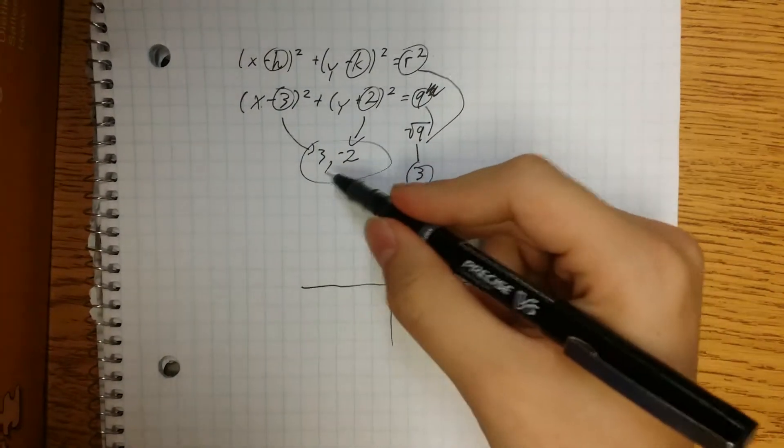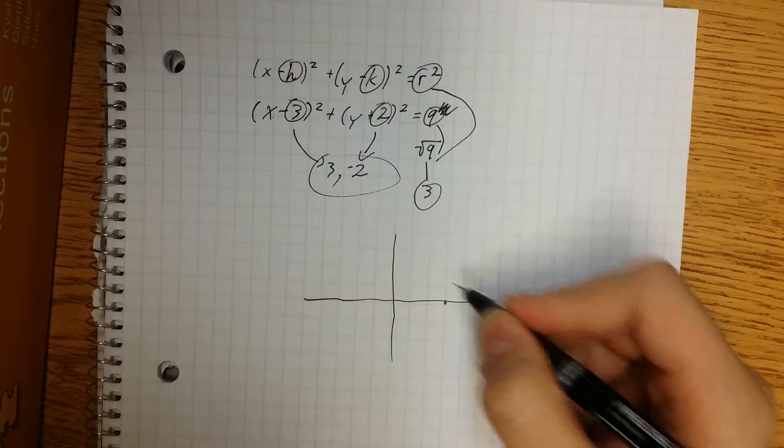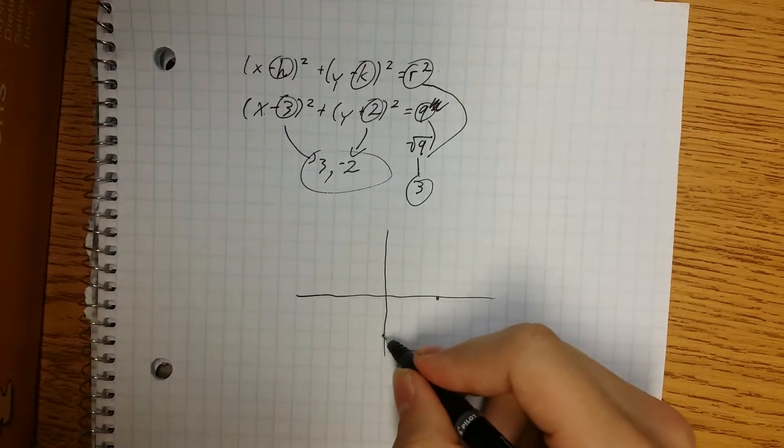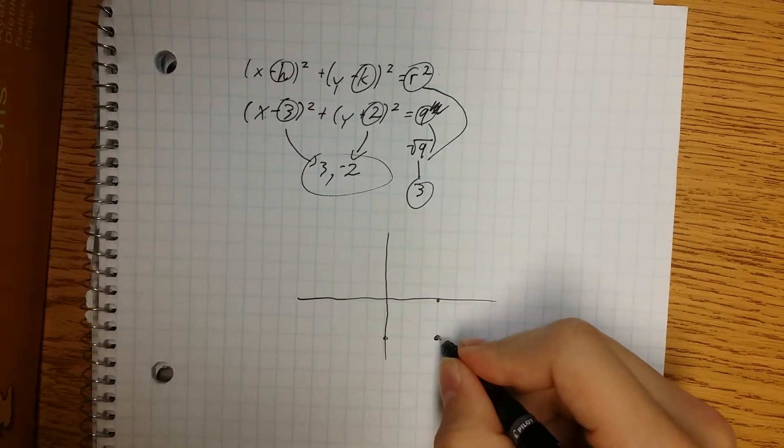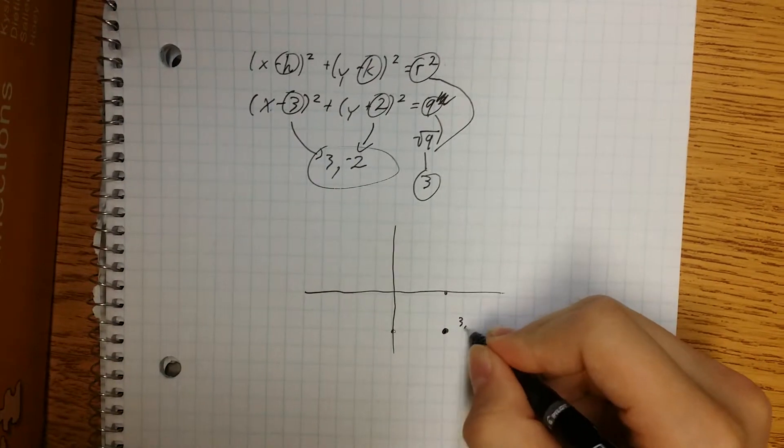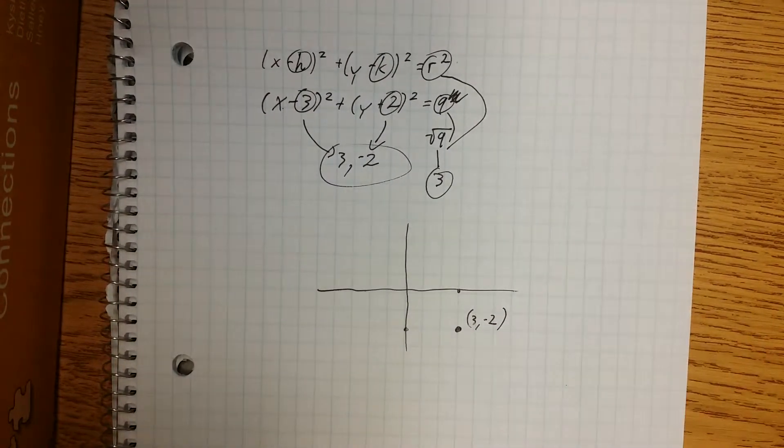Let's see. 3 is going to be right here, and negative 2 right there. They meet right there at 3, negative 2. That is the center.